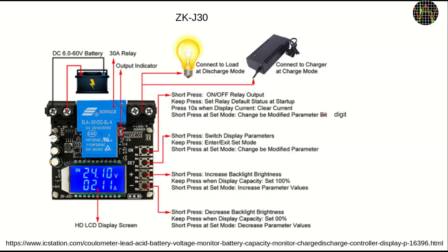The module is the ZKJ30, which can handle batteries from 6 to 60V and up to 30A of current. This picture is from their website. I also leave a link in the description.